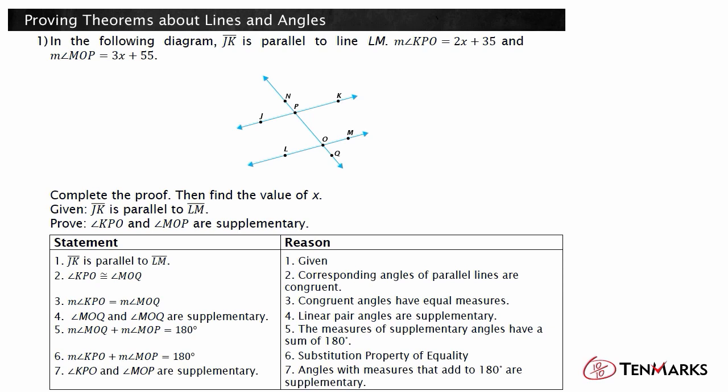Now, find the measure of x. Remember, the measure of angle KPO plus the measure of angle MOP is equal to 180 degrees. Substitute the given expressions and solve for x. X equals 18.